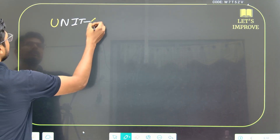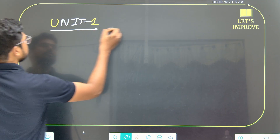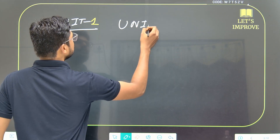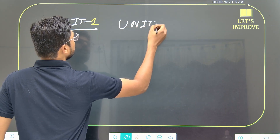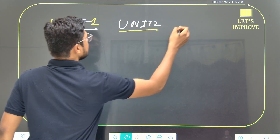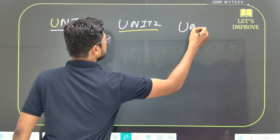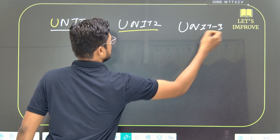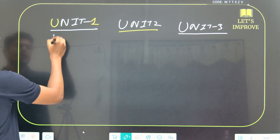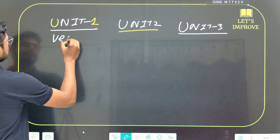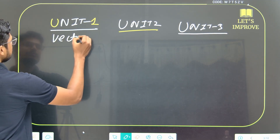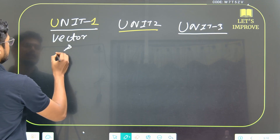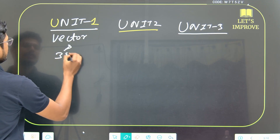Unit 1, Unit 2, and Unit 3. Unit 1 covers Vector and 3D Geometry.